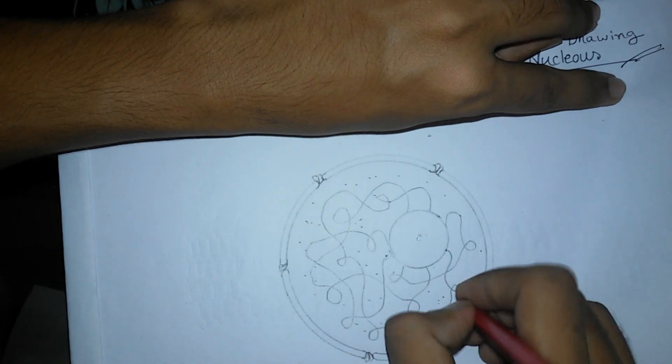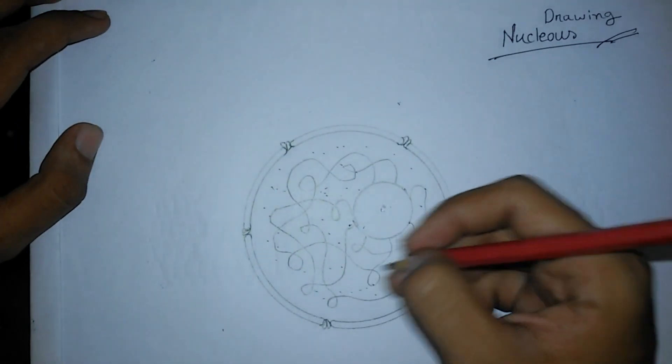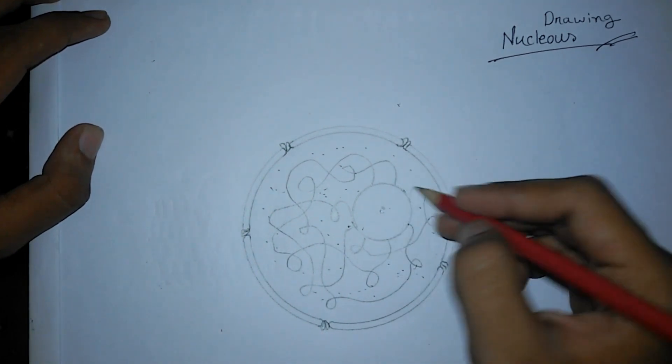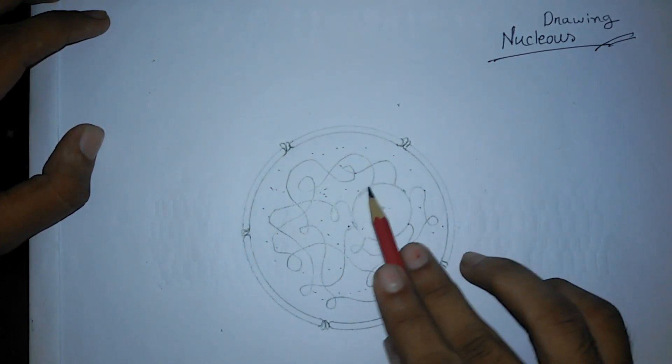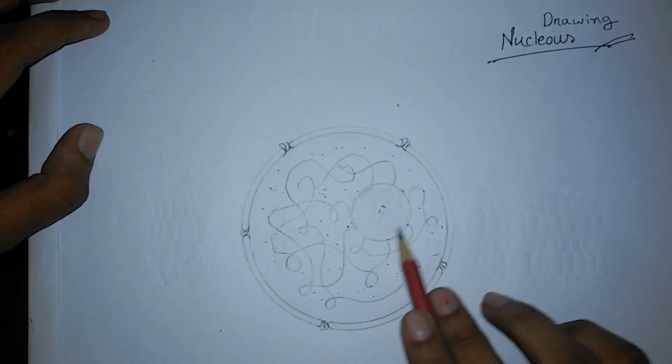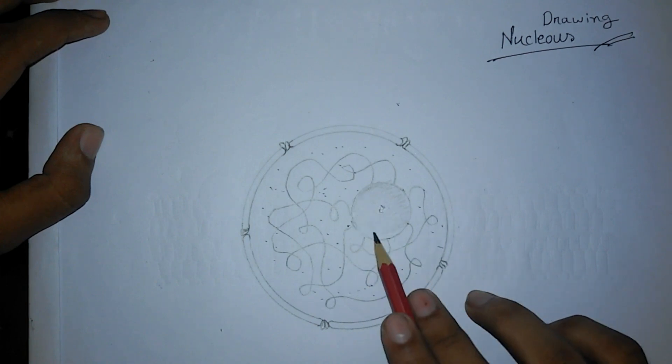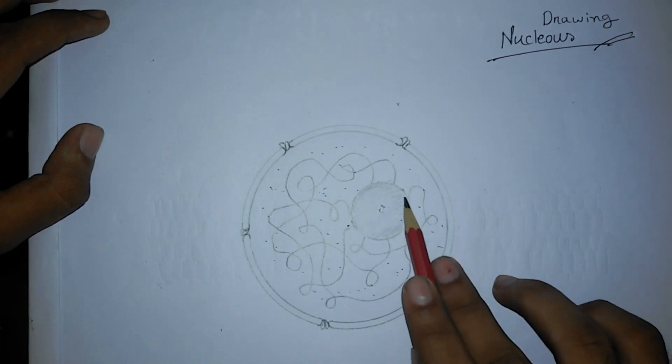Then I have to add the nucleoplasm—like this, some liquid-shaped, colloid-natured nucleoplasm. I'm all set with this. Let me sketch and highlight and make the color black of the nucleolus.